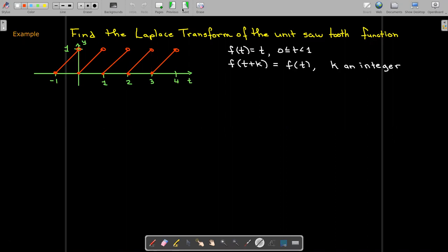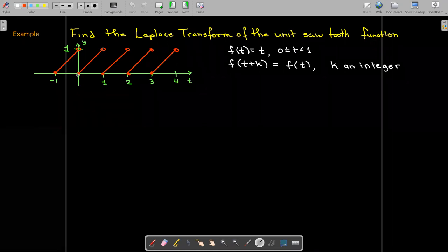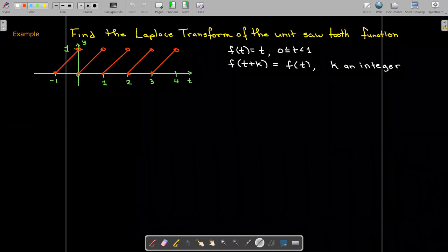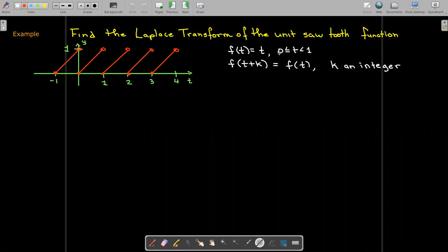We can write the formula for this particular function as f(t) = t. That just means if we look at the very first line segment starting at the origin, it has a slope of one, its domain is only between zero and one, with one not part of the domain, but then it repeats itself.